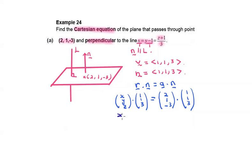This equals to x + y + 3z = 2 times 1 is 2, 1 times 1 is 1, minus 3 times 3 is negative 9, which equals negative 6. This is the Cartesian equation of this plane.